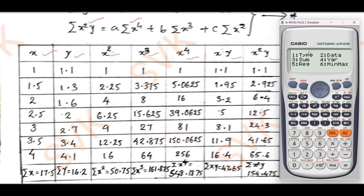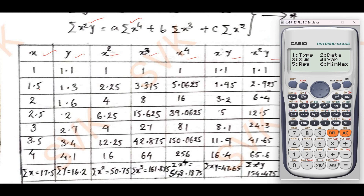After entering values, press AC — do not press the ON button until the problem ends. Then press Shift 1 again and go to 'Sum,' press 3. For example, to get summation x, press 2 and equal to — you get 17.5. For summation x²y, press 7 and equal to — you get 154.475. You can check any intermediate value using this procedure.